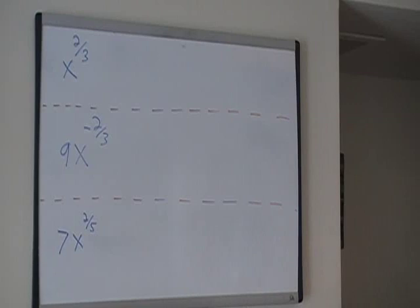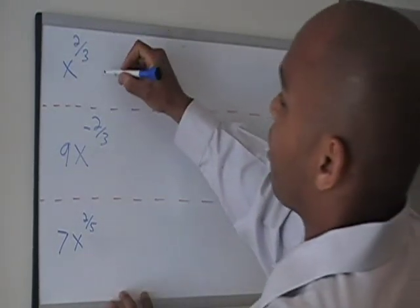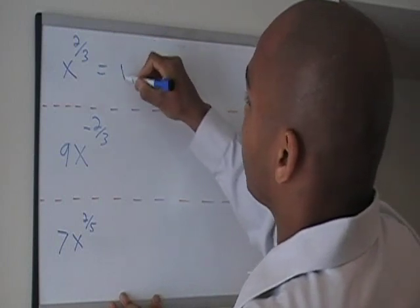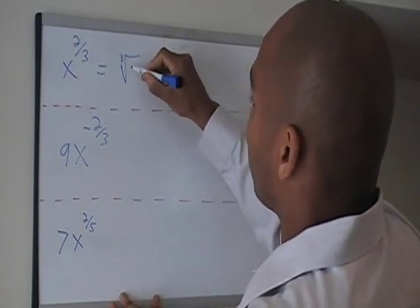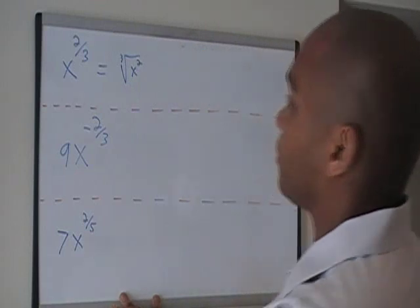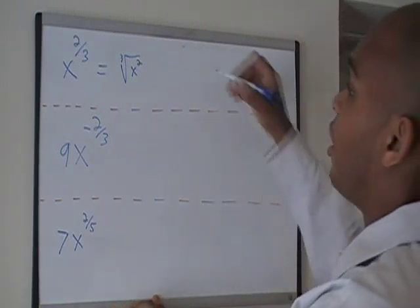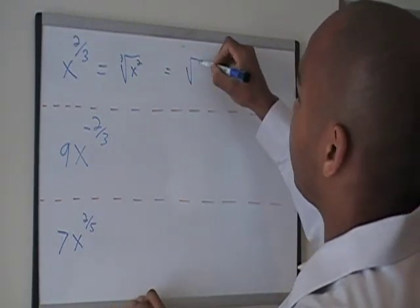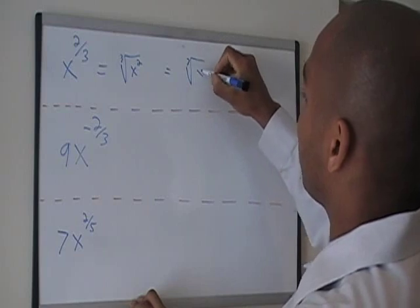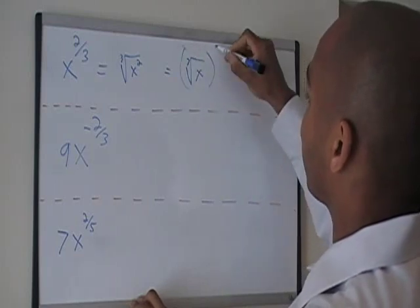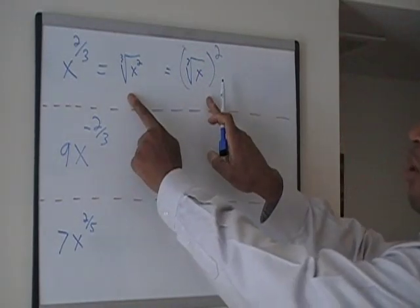I'd like to rewrite each expression in radical form. So x raised to the 2/3 can be written as the cube root of x squared. That's one option. Another option would be the cube root of x and everything is squared. Either of these two answers are correct.